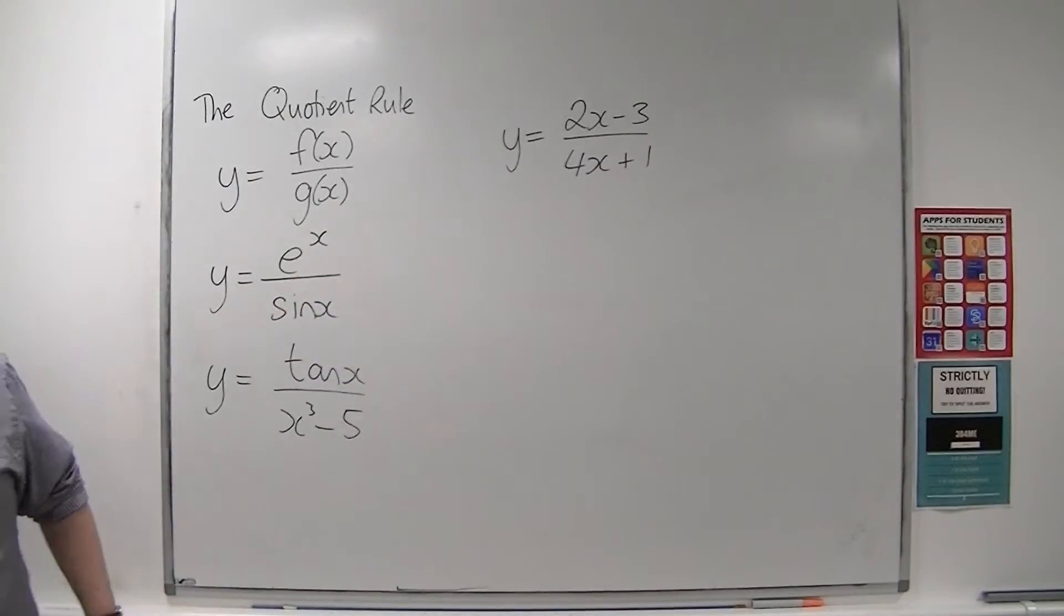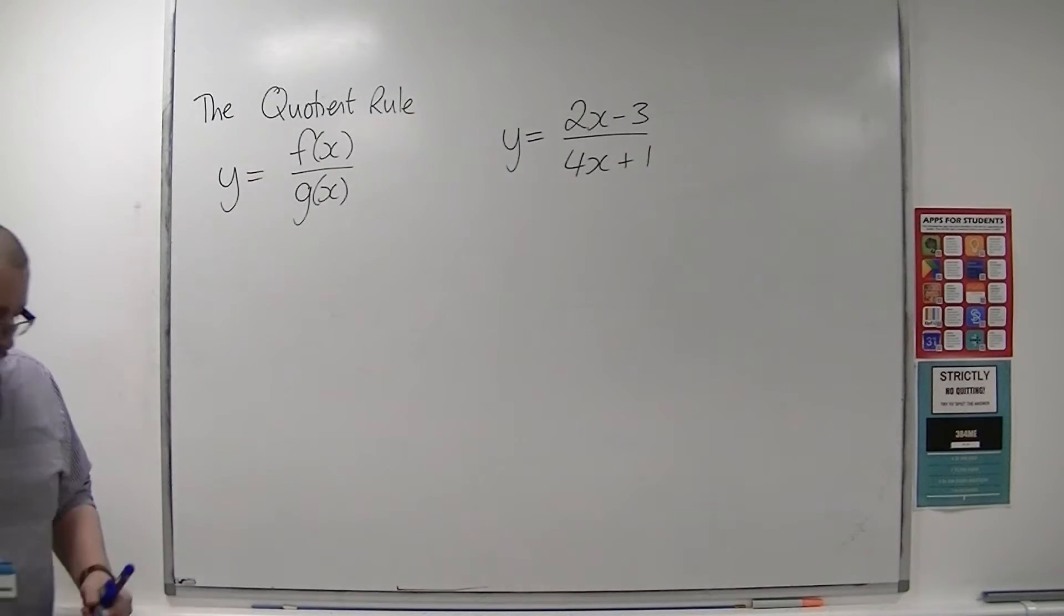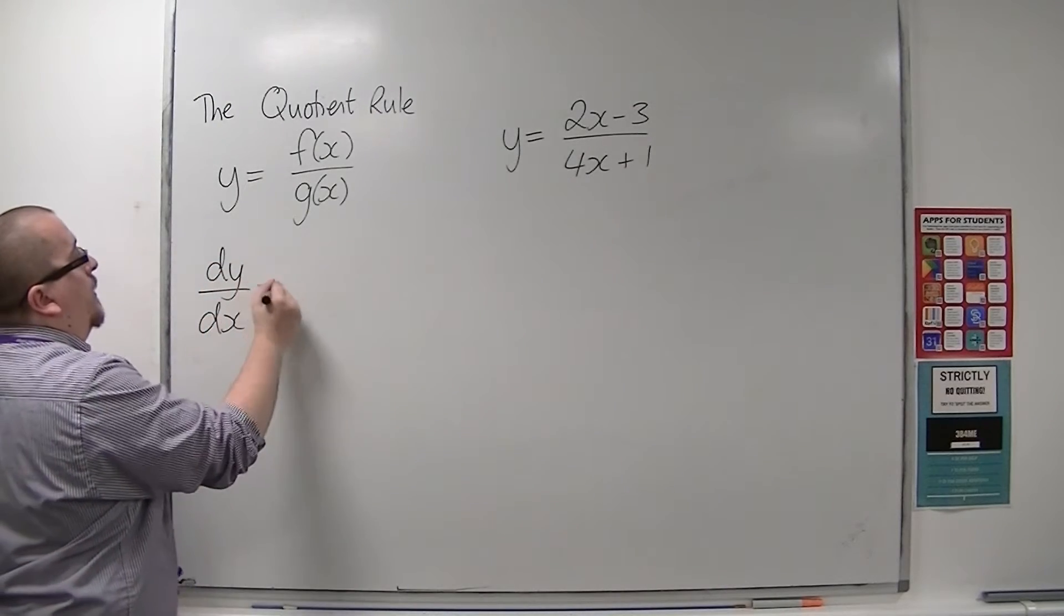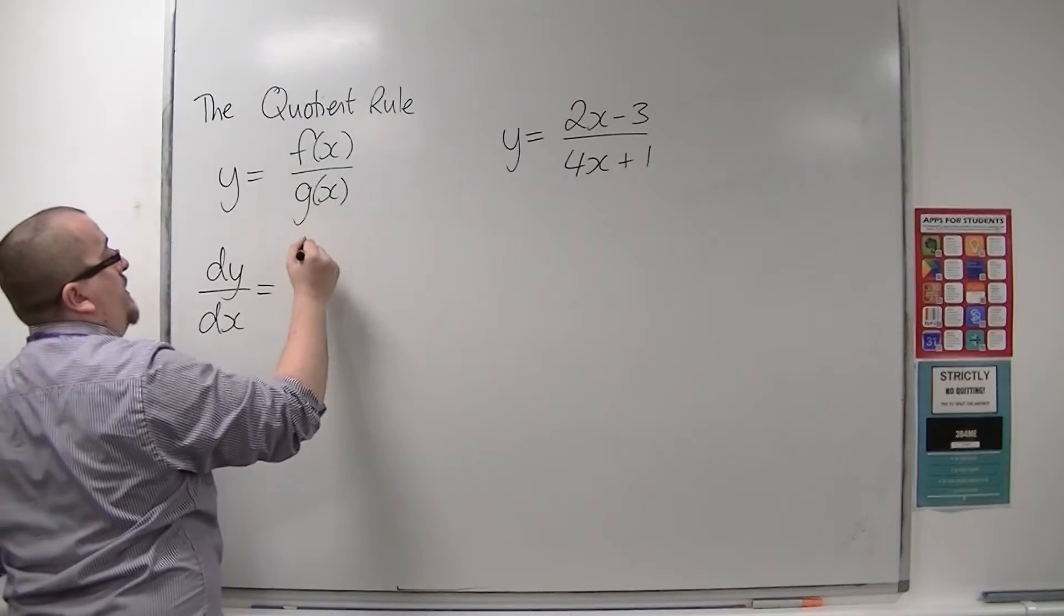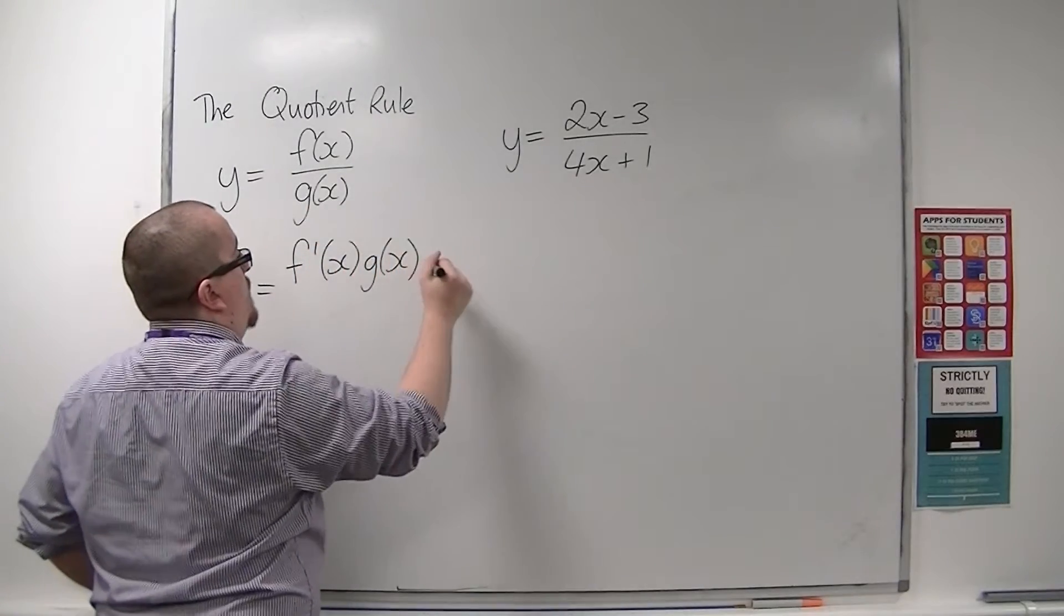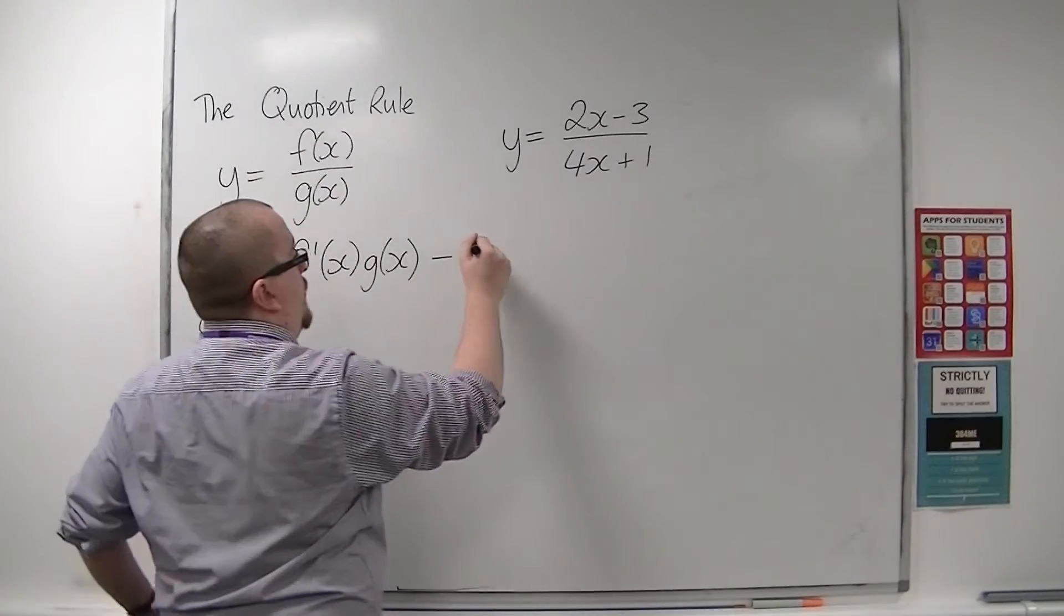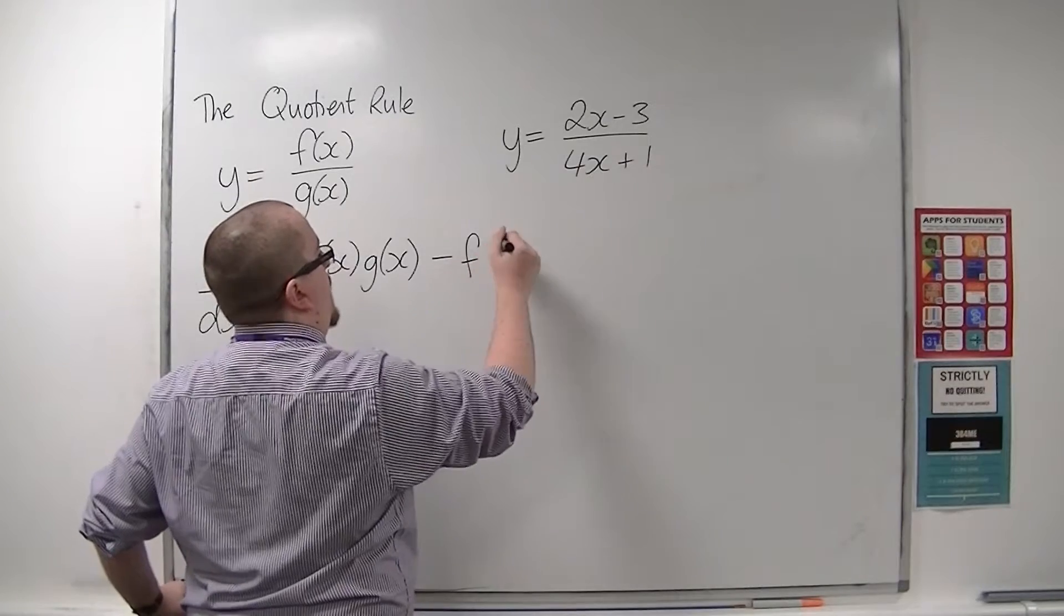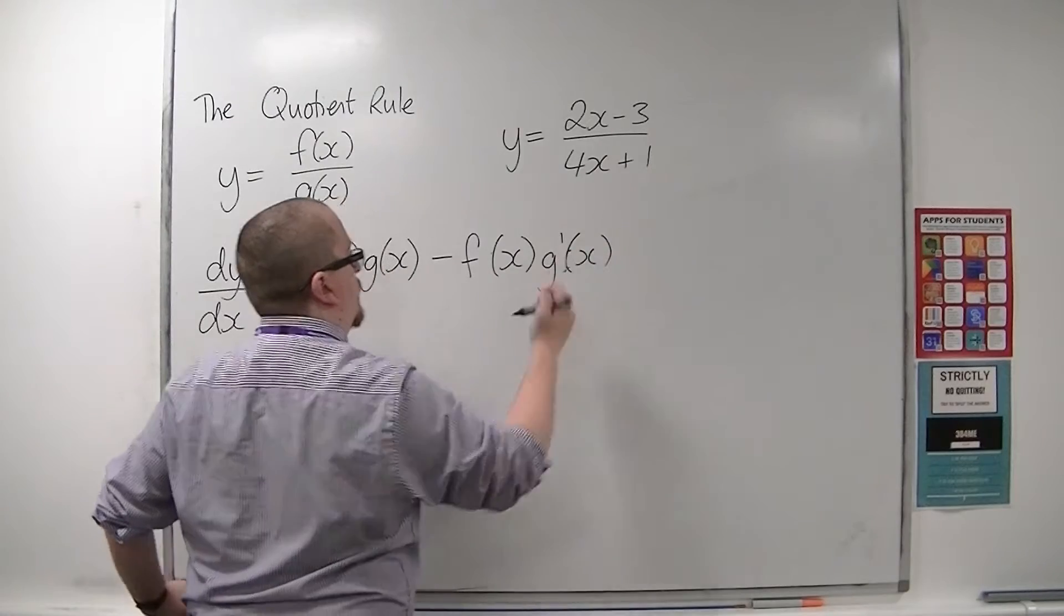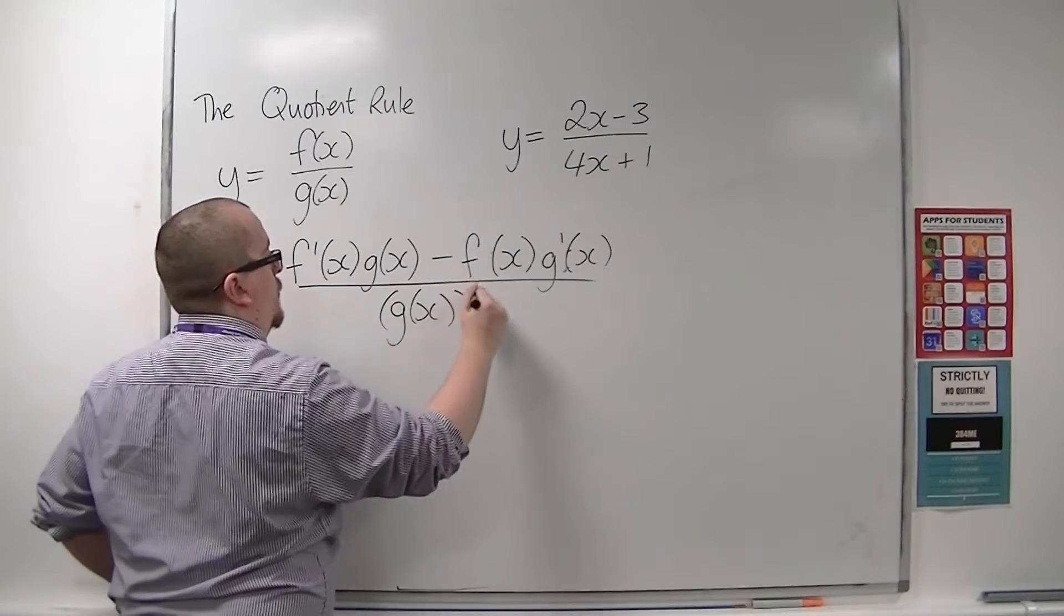The quotient rule says that if y equals f over g, then dy/dx is the bottom times the derivative of the top, so g(x) times f'(x), take away the top times the derivative of the bottom, so f(x) times g'(x), divided by the bottom squared.